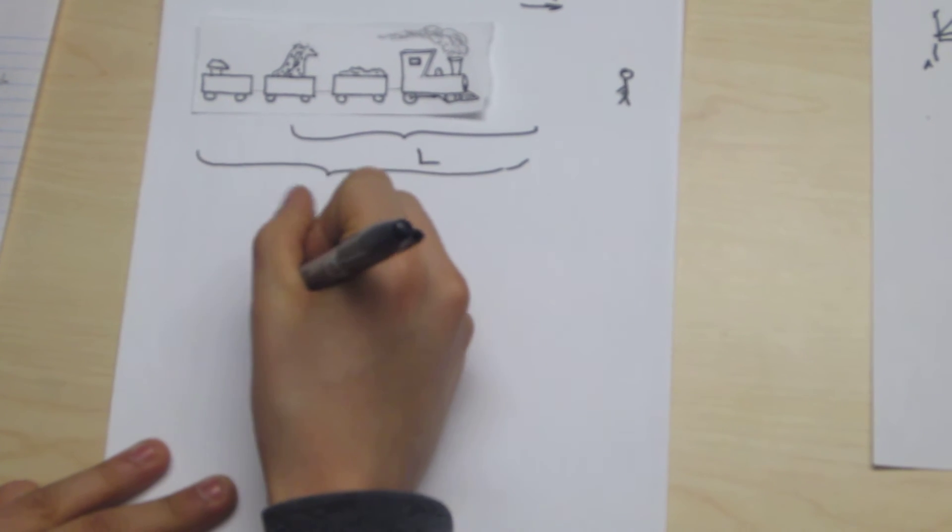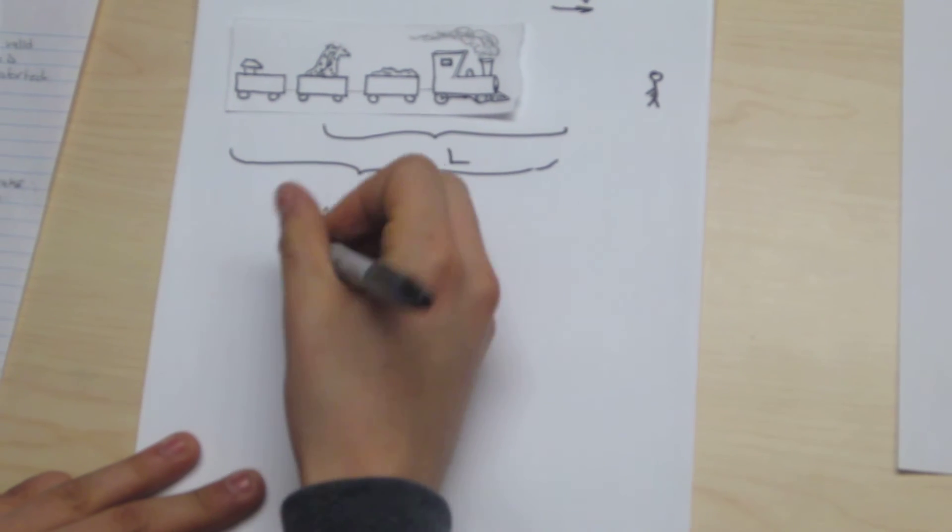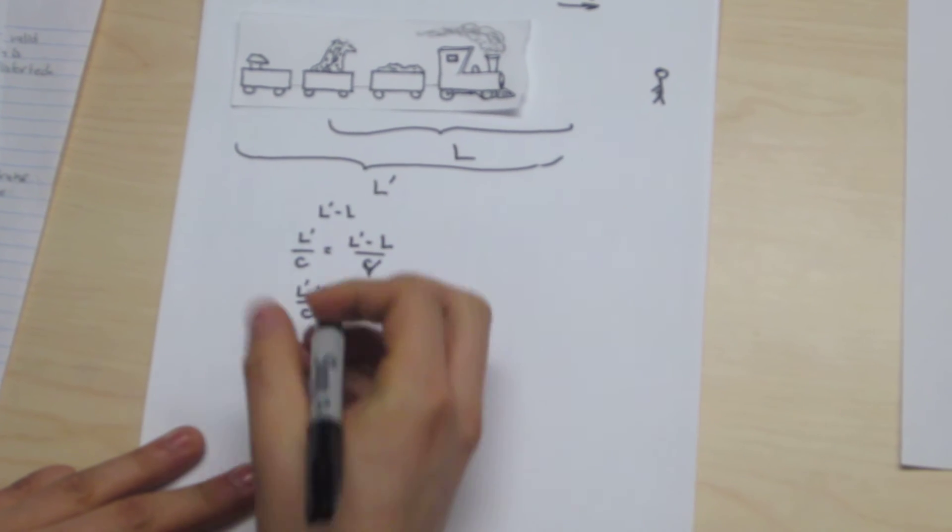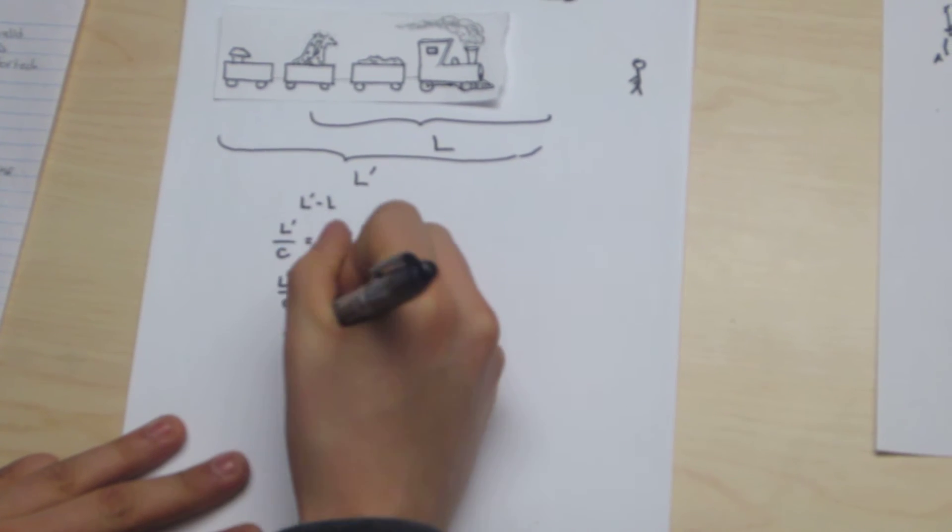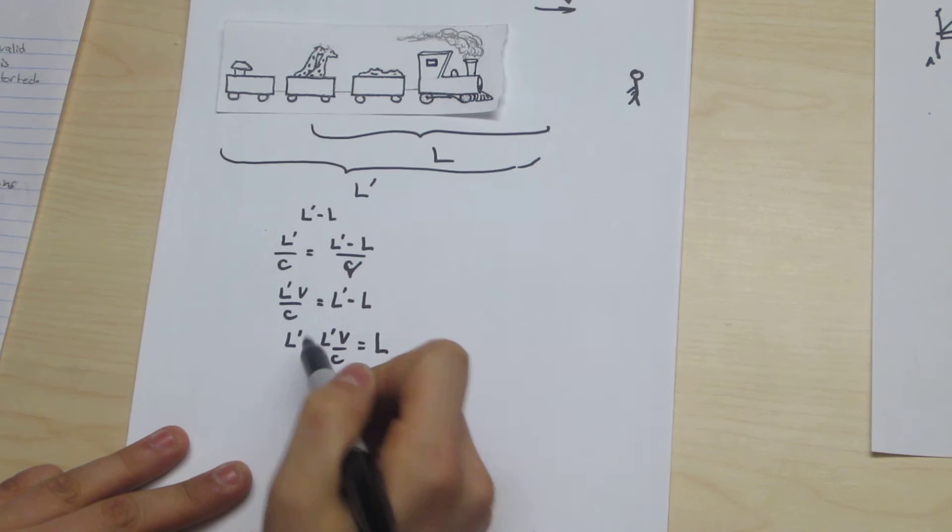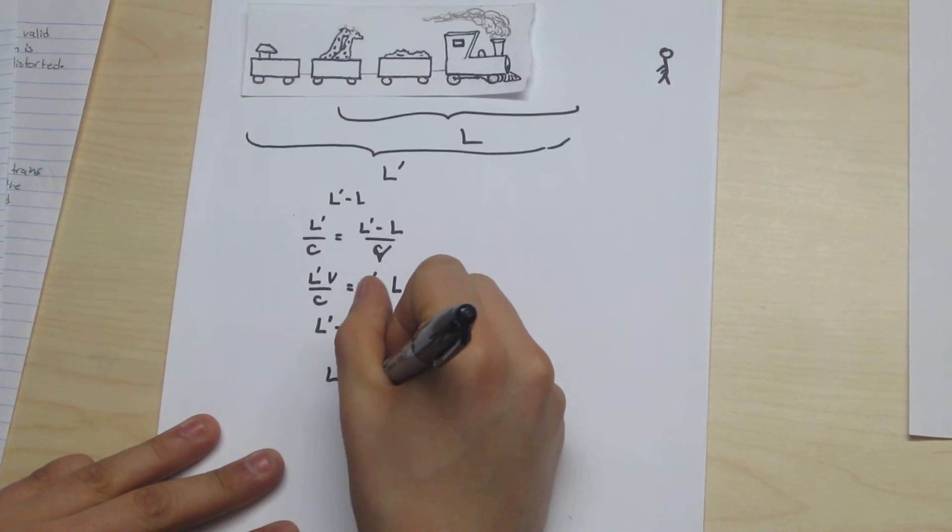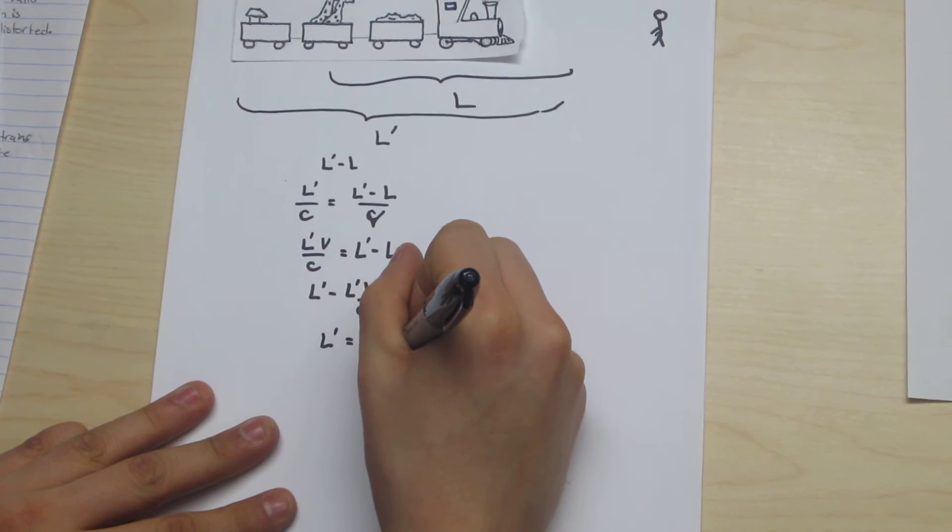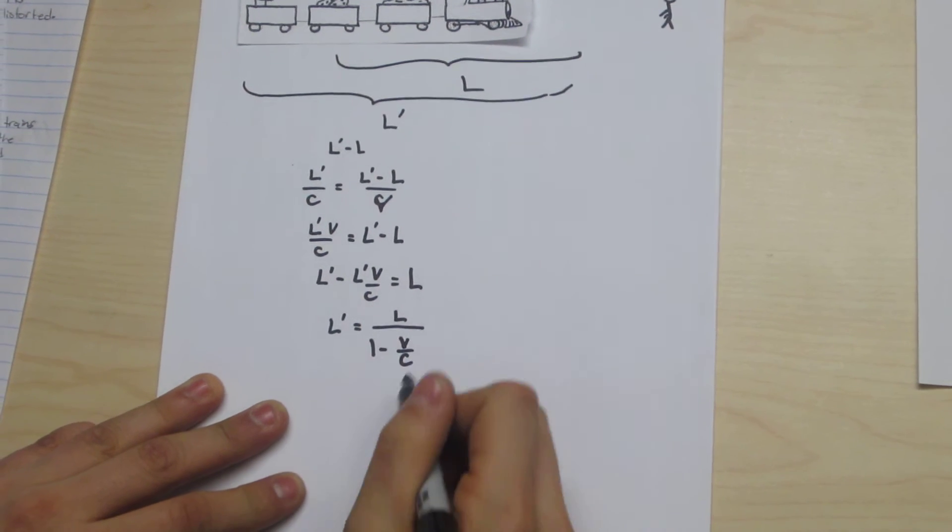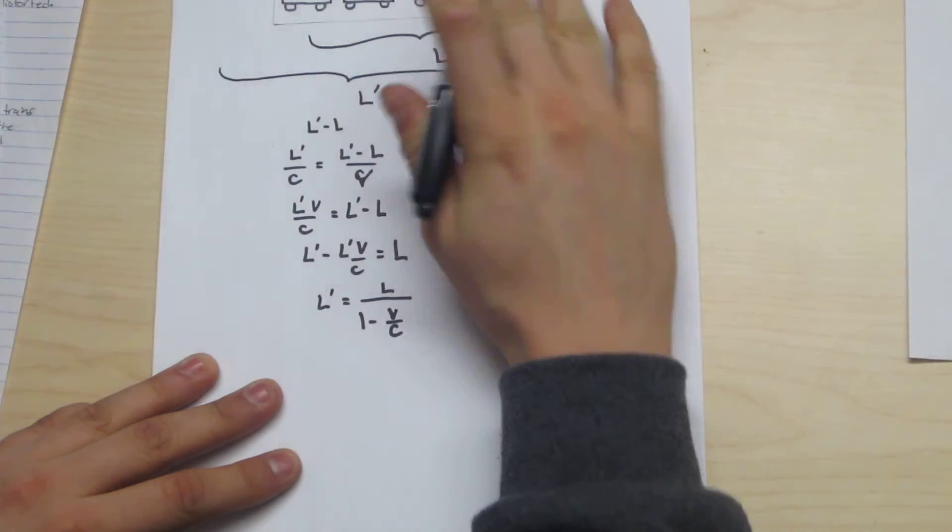And in the time it takes time to move a distance l, so it takes time to move a distance l prime over c, which is equal to l, where I've moved the negative over as well. And l prime is equal to l over 1 minus v over c, where this 1 minus v over c is a correction factor for the real length and the apparent length as viewed by our observer.